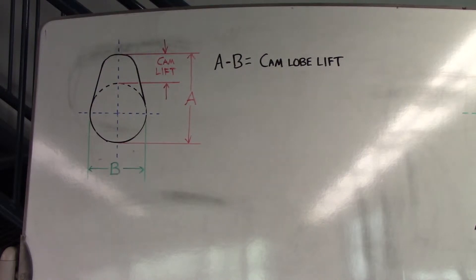The first measurement must be taken across the largest portion of the lobe, as indicated by dimension A in the diagram. The second measurement will be taken across the base circle, indicated as dimension B in the diagram.